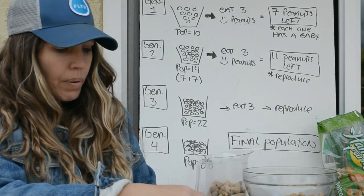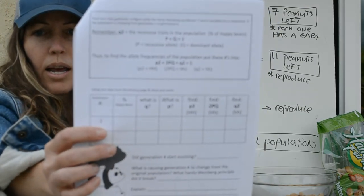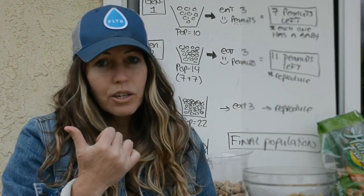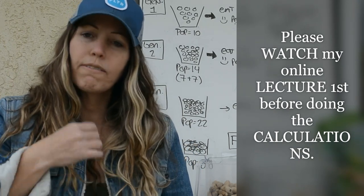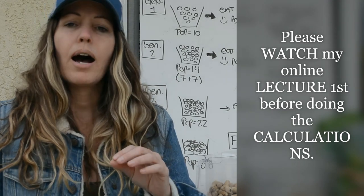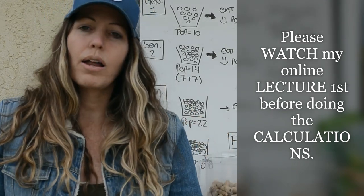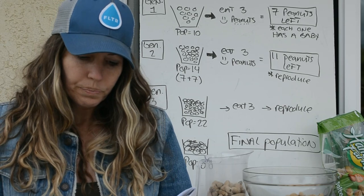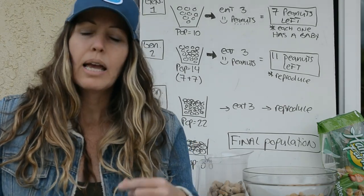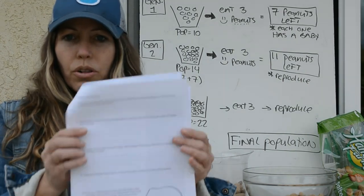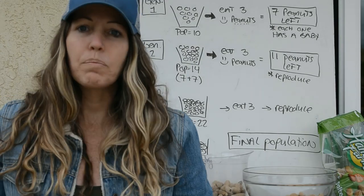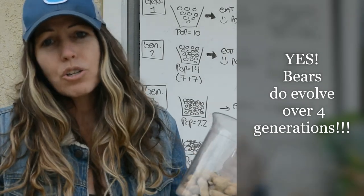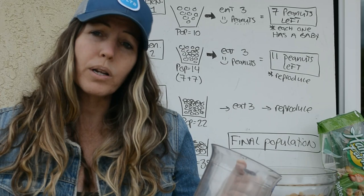On the second page I'm giving you an equation. Before you do this lab, please watch my lecture on Hardy-Weinberg first, then finish the lab, because you'll need to do some mathematical and statistical analysis on whether generation one has statistically changed from generation four. Once you figure out if the bears are evolving, answer the questions. Big hint: yes, the bears are evolving — these peanuts, because I was attacking them, will start to evolve within four generations. Pretty quick!